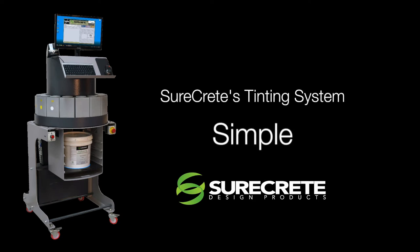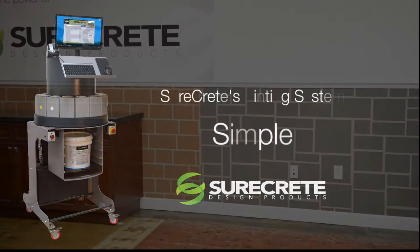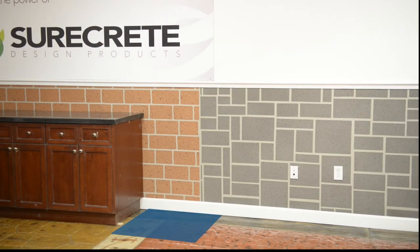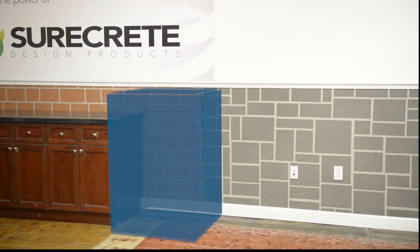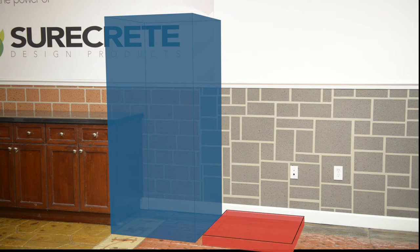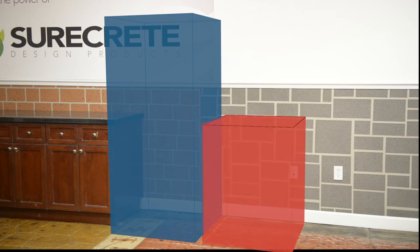Simplicity, the SureCrete Tinting System. SureCrete's tint machine requires three linear feet of wall space, with an additional three linear feet needed for a manual orbital shaker.